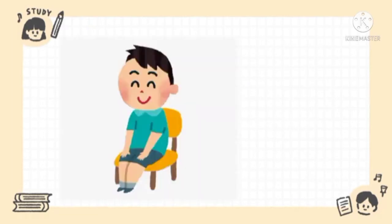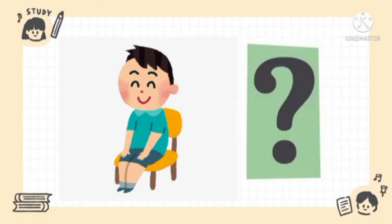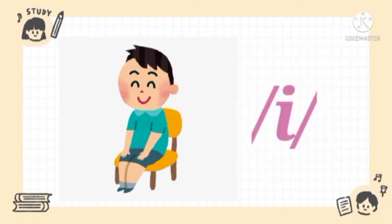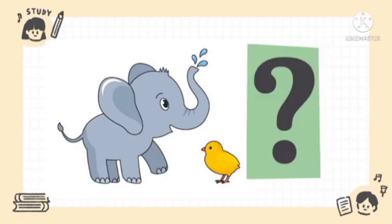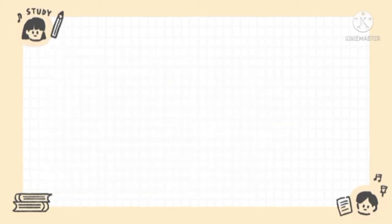Next, what word is this? The word is SIT. What is the middle sound? The middle sound is E. Next, what word is this? The word is BIG. What is the middle sound? The middle sound is E. Well done, children.